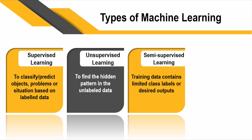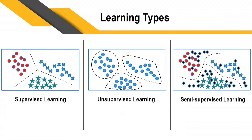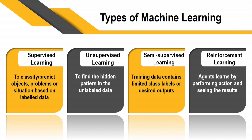In semi-supervised learning, the training data includes a few class labels, but the machine can also group additional data beyond those labels, as shown in the slide. In reinforcement learning, an agent takes actions and observes results — if the result is positive, the agent continues in that direction; if negative, it goes in the opposite direction.